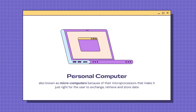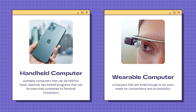Handheld computers are portable computers that can be held by hand. They have relatively limited programs that can be executed compared to personal computers. Wearable computers are computers that are small enough to be worn, made for convenience and accessibility.